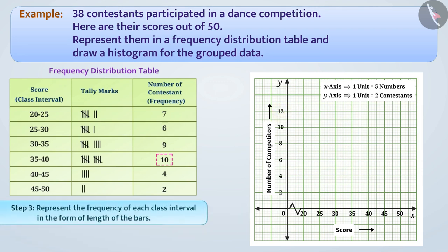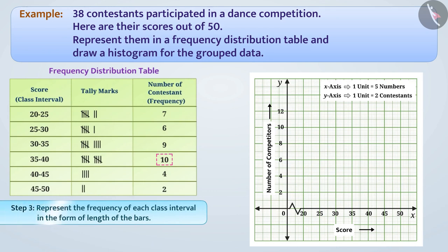Now, we will represent the frequency of each class interval in the form of length of the bars. For example, to represent the frequency of the class interval 20 to 25, we will draw a bar whose length will be 7 contestants. Similarly, we will show the frequency of all class intervals.